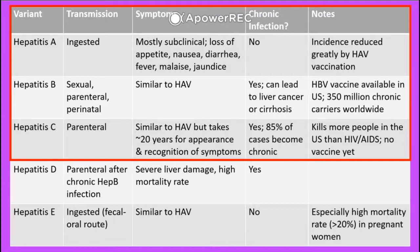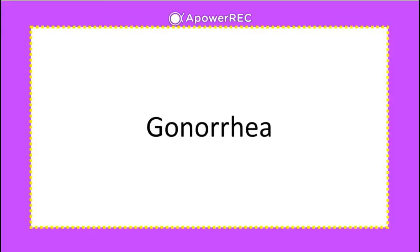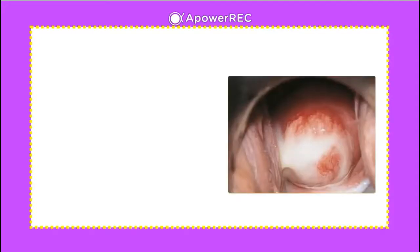Hepatitis C can be spread through the parenteral route and is especially common among those who use intravenous drugs. It is similar to HIV but takes about 20 years for symptoms to appear. About 85% of cases become chronic, and it actually kills more people in the US than HIV. Because of considerable antigenic variation, it has been difficult to develop a vaccine.